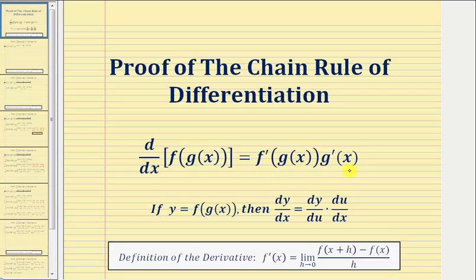We often say the derivative of this composite function is equal to the derivative of the outer function, evaluated at the inner function, times the derivative of the inner function, where f is the outer function and g is the inner function.